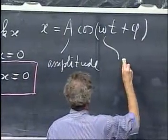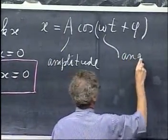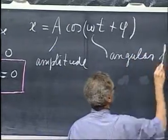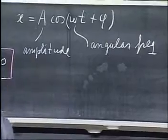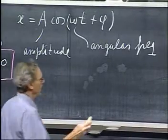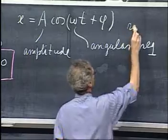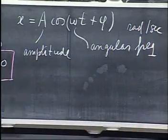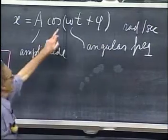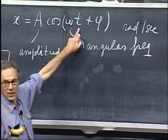So the amplitude indicates that is the farthest displacement from zero on this side would be plus a, and on this side would be minus a. So that's in meters. This omega, we call the angular frequency. Don't confuse it with angular velocity. We call it angular frequency, and the units are the same. The units are in radians per second. The same as angular velocity.